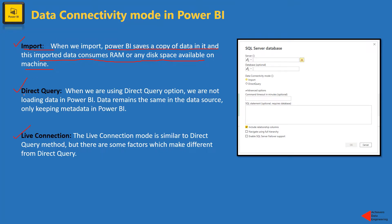When we talk about direct query, as its name suggests, when we opt for direct query we are not importing data into Power BI. Data remains in the same data source. We only keep metadata in Power BI. For example, if we are connecting to SQL Server and opt for direct query instead of import, data will stay in SQL Server. Only metadata — for example, data types, table names — will be imported in Power BI so that we can use that as a reference to build visualizations and reports.